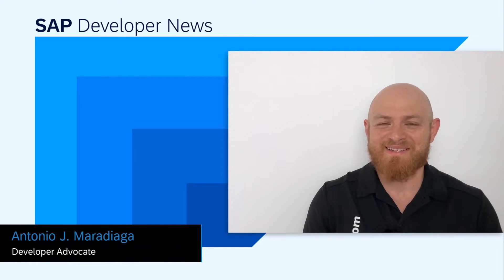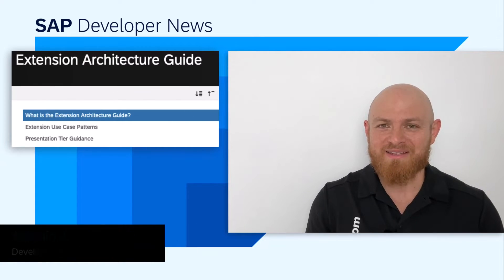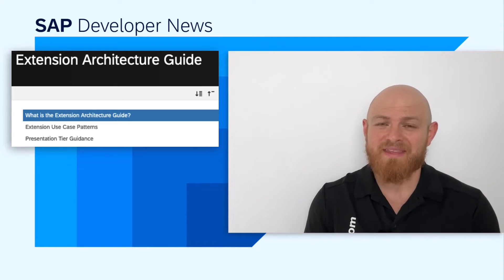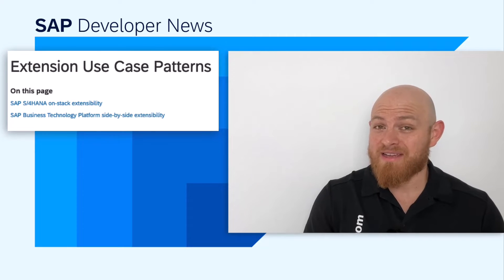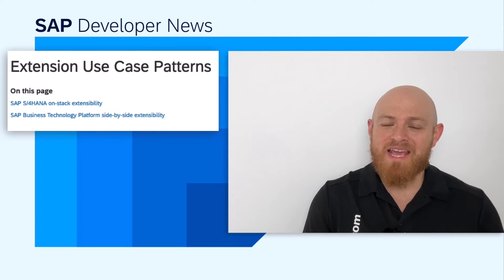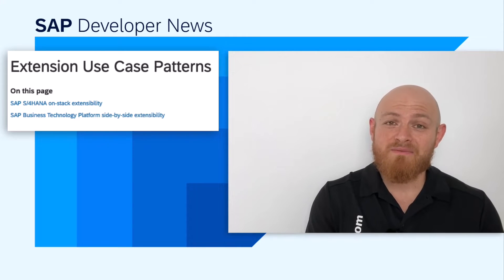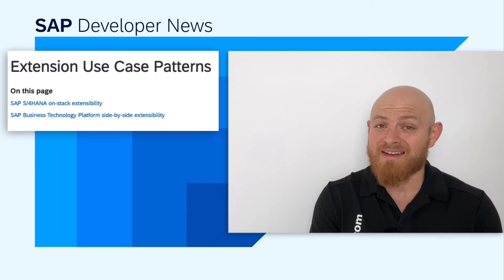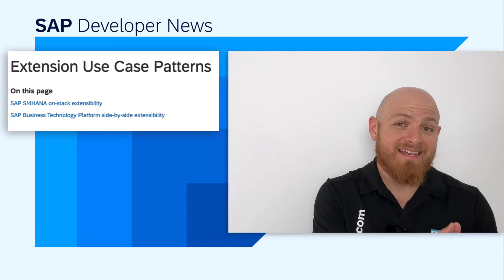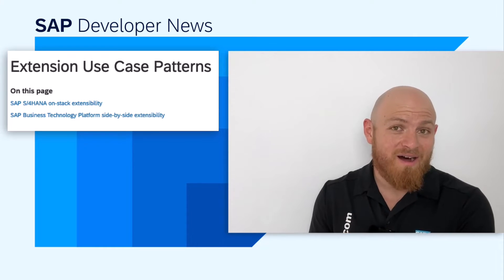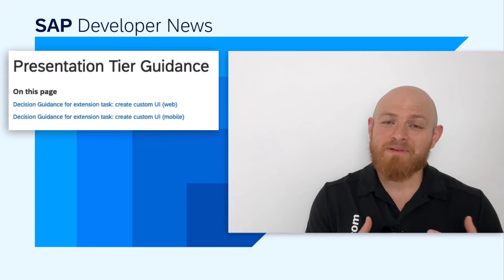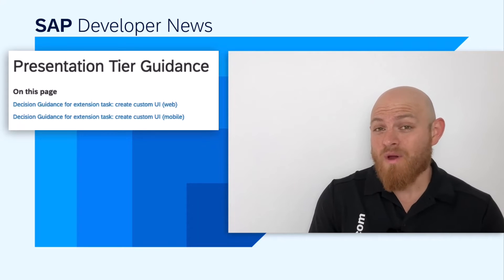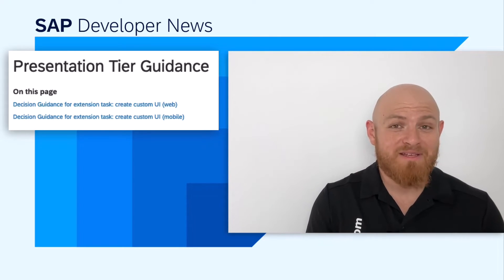Hello, SAP developers and architects. Are you familiar with the extension architecture guide? It is part of the BTP guidance framework and is based on the application extension methodology. This guide will help you decide which SAP technology to use for a given scenario. For example, it provides you with extension use case patterns, which will help you decide if an extension should be developed in the SAP S/4HANA stack or if it is best suited for a side-by-side extensibility scenario on SAP BTP. It will also provide presentation layer guidance — for example, when building your customer UIs, be it web or mobile, it will help you decide which SAP technology to use. Links are included in the description below.